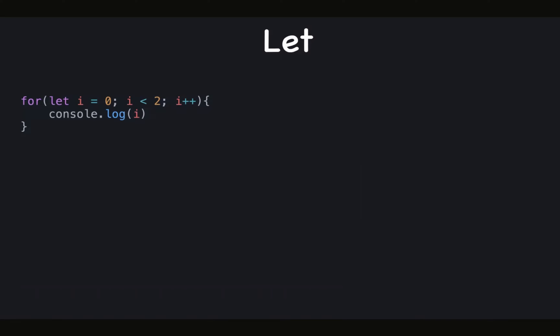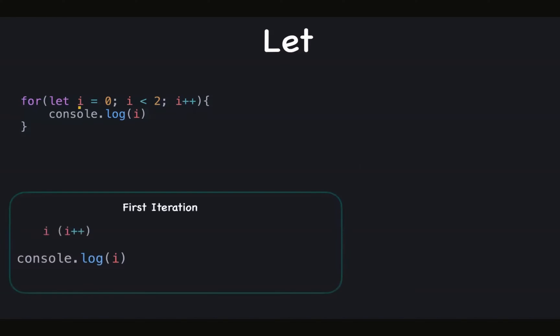Now here we have a for loop with let declaration. let provides a separate i declaration in each iteration, whereas with var we have only one i. Also, the increment happens at the start of each iteration except for the first one, whereas with var the increment happens at the end of each iteration.